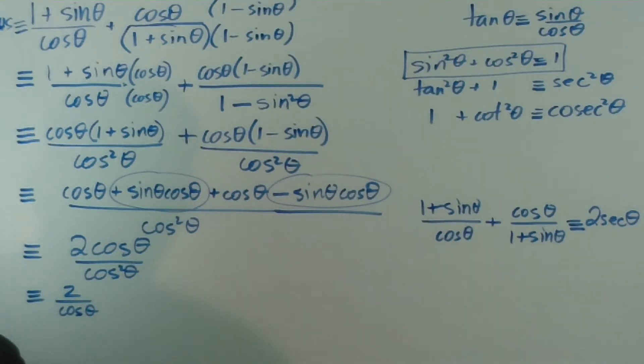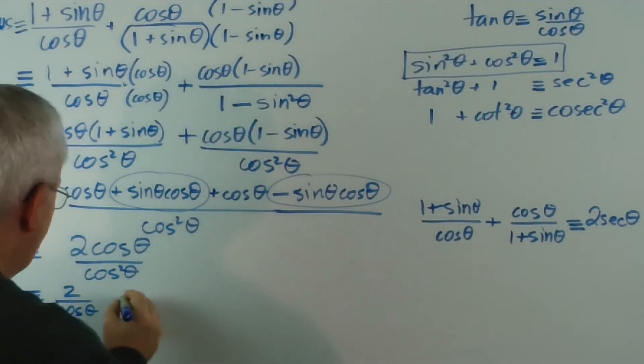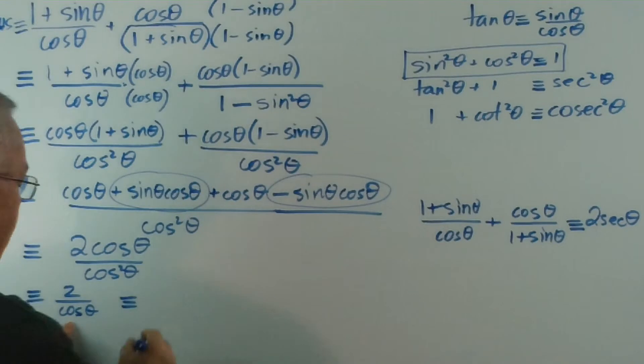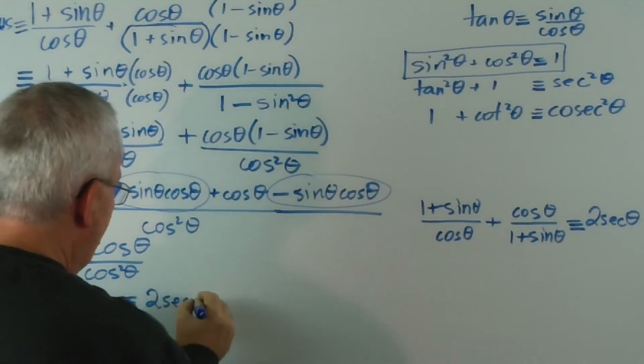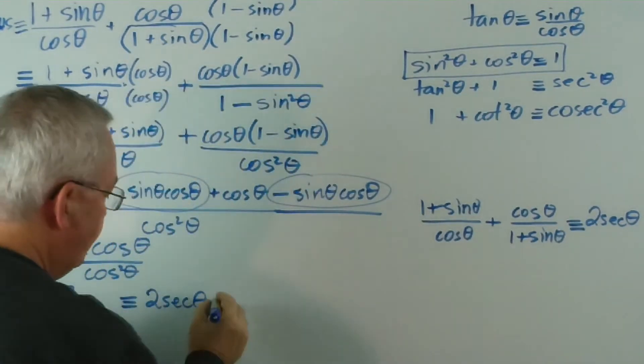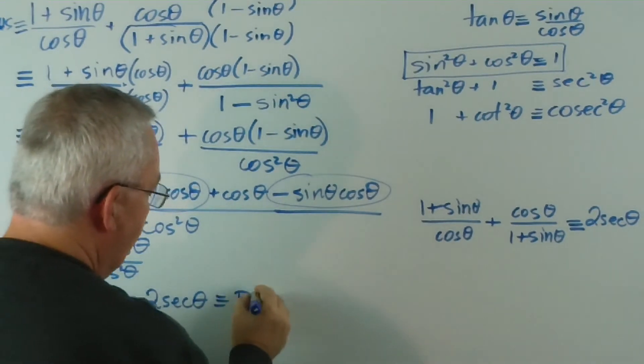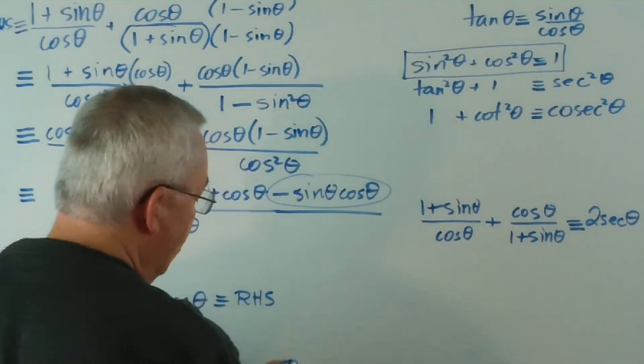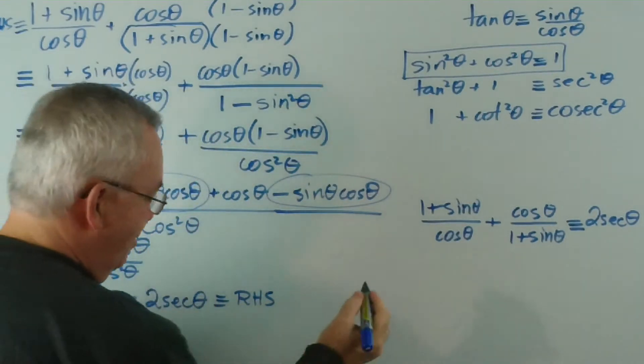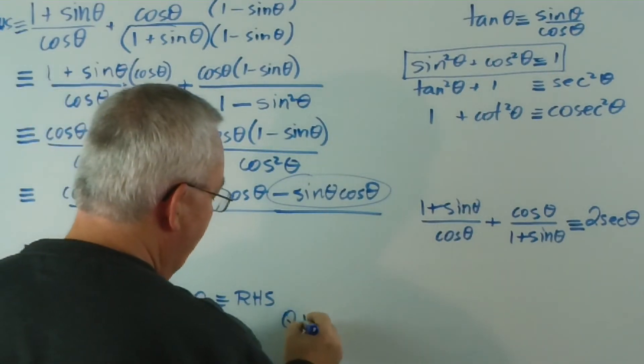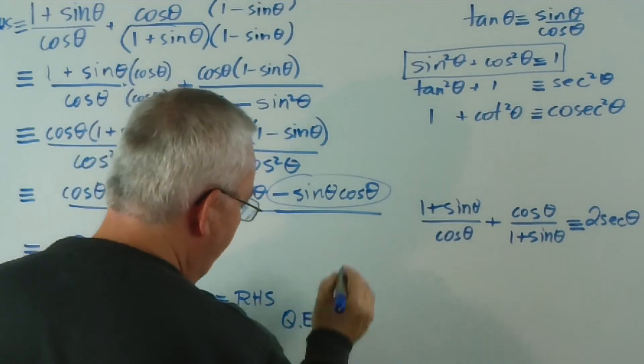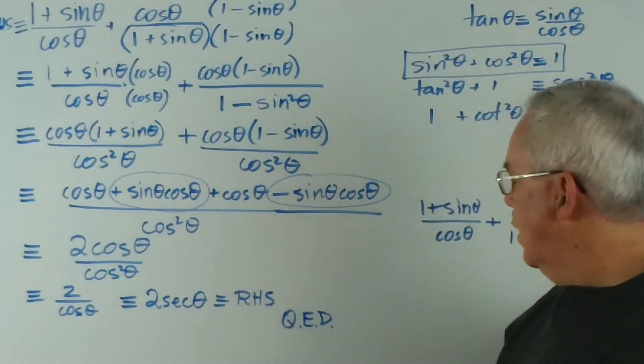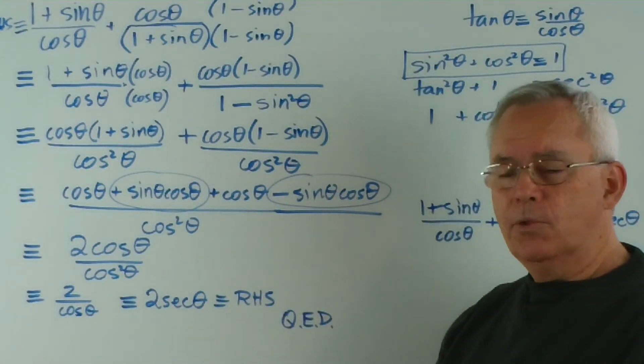And of course, I think I'm getting very close to the bottom of the board, so I'll actually head across the board. 1 over cos theta is sec theta. And look at that. And that's the right-hand side of our equation. And you can finish if you want to look a bit clearer. Quod erat demonstrandum in Latin. What we were to prove or demonstrate.